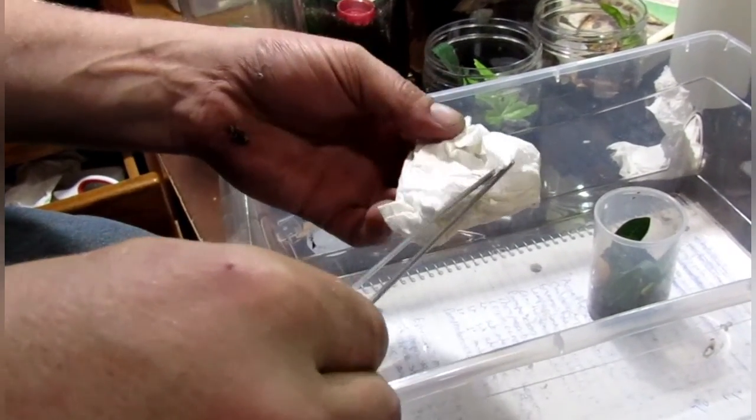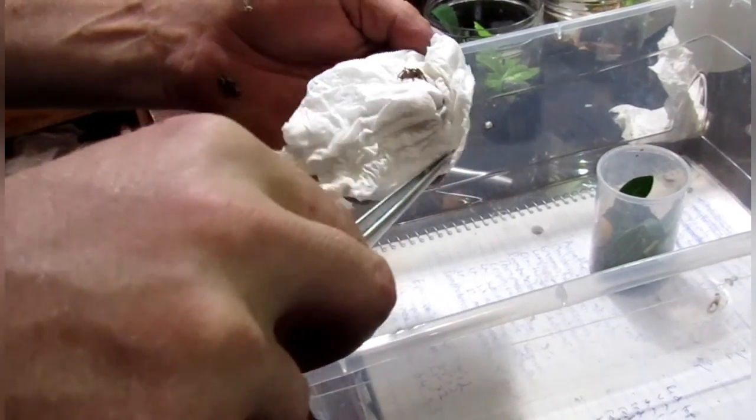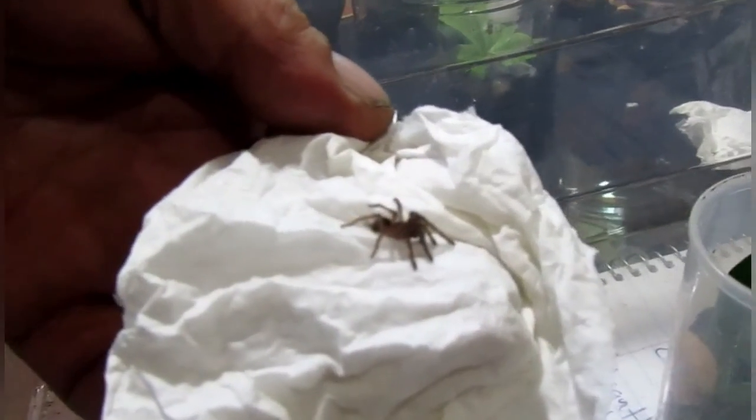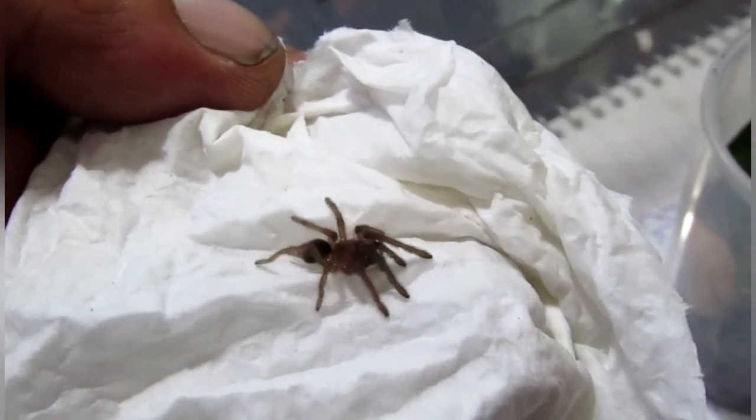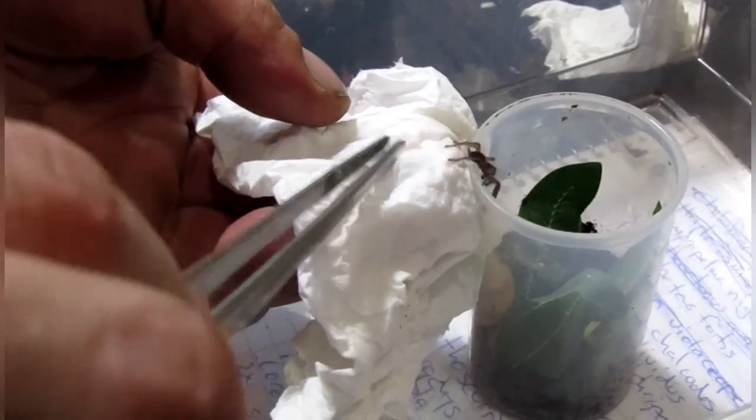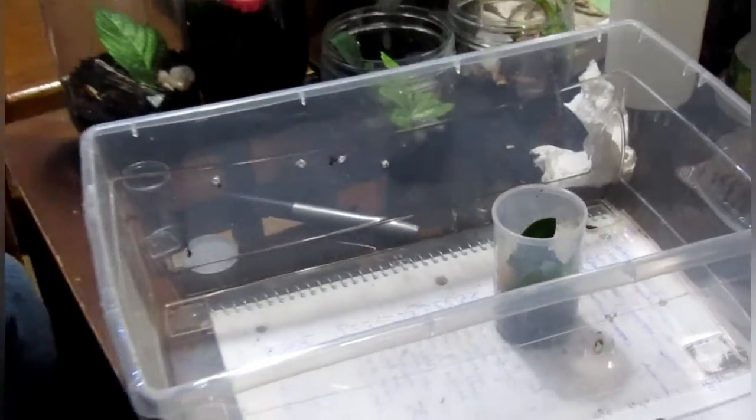There we go. Look at that. Fimbriatus. And we're just going to see what the chances are of this little guy. Look at that. Like a champ. Like a champ.